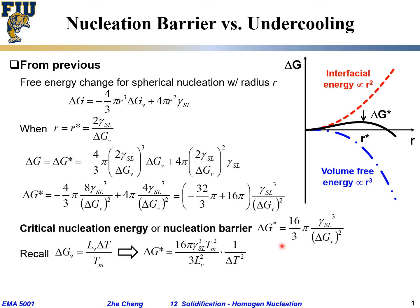We can have the so-called ΔG*, the critical nucleation energy height would be 16/3 π γ³. The ΔGv² term becomes Tm² over L² ΔT². Tm² on top and ΔT² in the denominator. But in essence, what do we get?